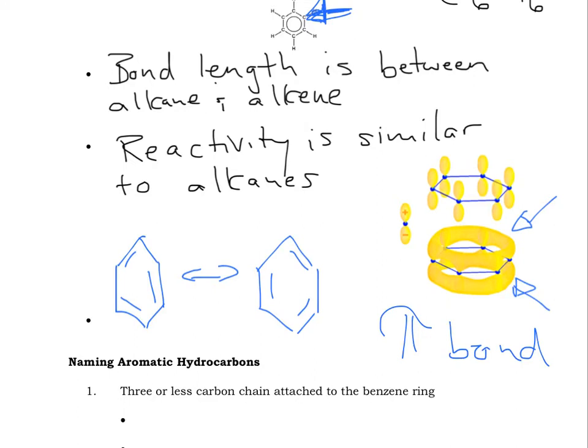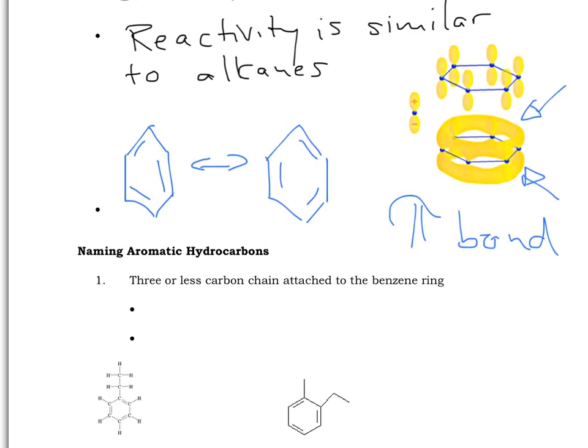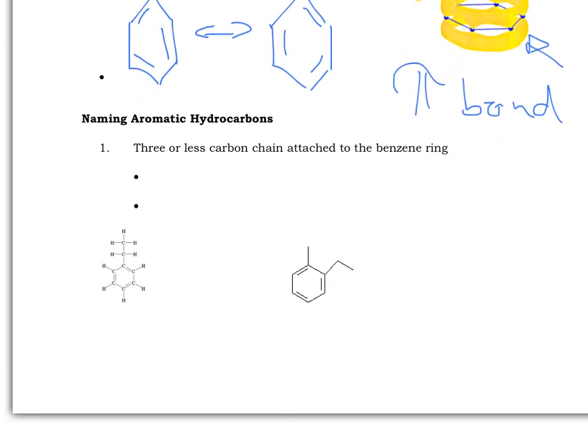Now, because they are not alkanes, and not alkenes, they have their own naming rules. The naming rules is actually two sets. If there's three or less carbons attached to the benzene ring, the benzene is the parent chain. So, in the cases where three or less carbon chains are attached, benzene is our parent, and everything else are branches.